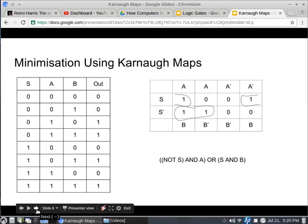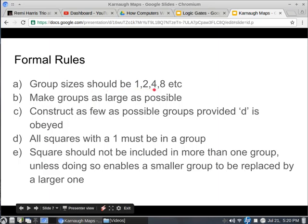Now we need to talk formally a little bit more about these groups. So, group sizes should be 1, 2, 4, 8, and they need to be rectangles or squares. Rectangles and squares are fine, but you can't have L shapes, or T shapes, or anything like that. Make groups as large as possible. You always need to make them as large as possible. Construct as few possible groups, provided D is obeyed. So you want to use as few groups as possible, provided every one has to be in a group. So you don't group the zeros. You group the ones. Squares should not be included in more than one group, unless doing so enables a smaller group to be replaced by a larger one. So you don't want to overlap these groups, unless doing so makes one of the groups bigger.